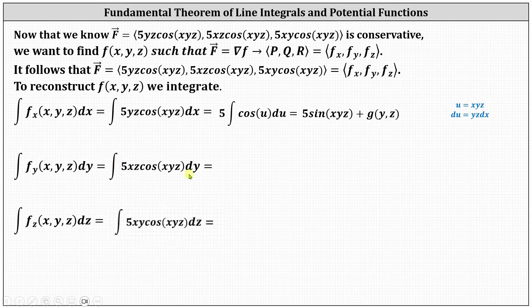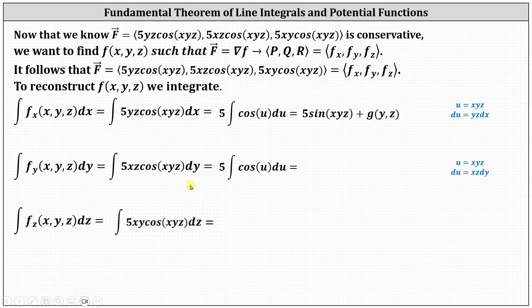Next, we integrate q with respect to y, treating x and z as constants, which once again requires u-substitution where u equals xyz, but du equals the partial of xyz with respect to y, treating x and z as constants, so du equals xz dy. With this substitution, we have the integral of 5 cosine(u) du, which equals 5 sine(u) plus c, or in our case, 5 sine(xyz) plus a function of x and z.